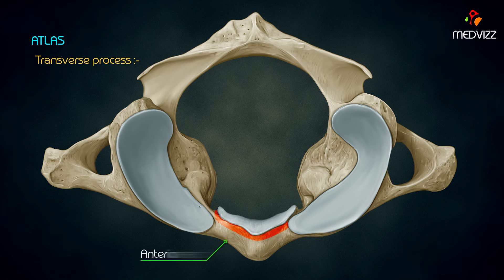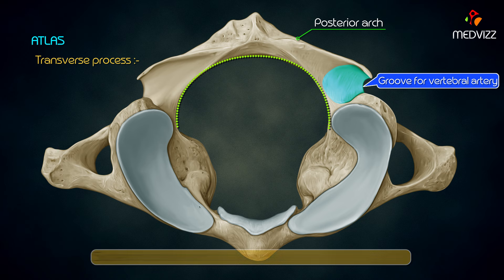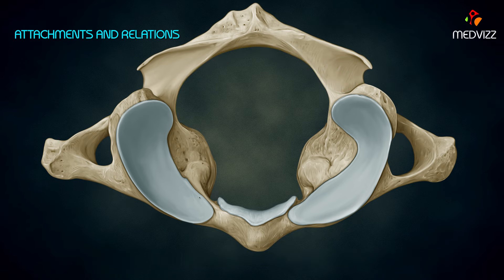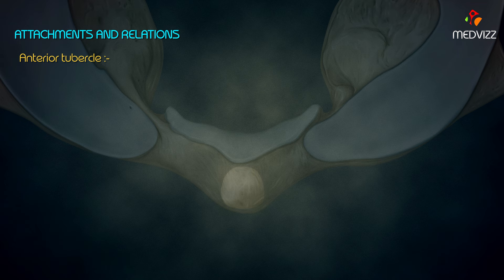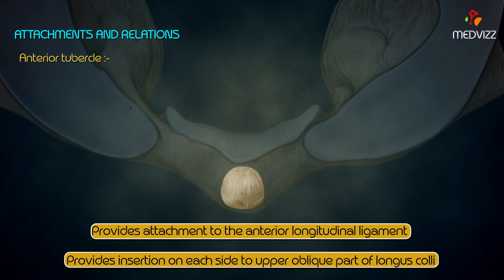Anterior and posterior arches, each bearing a tubercle at the center of its external aspect, extend between the lateral masses forming a complete ring. On the posterior surface of the anterior arch there is an oval facet which articulates with the dens. The posterior arch, corresponding to the lamina of a typical vertebra, forms about two-fifths of the ring and has a wide groove on its superior surface for the vertebral artery, in which the C1 nerve also runs.